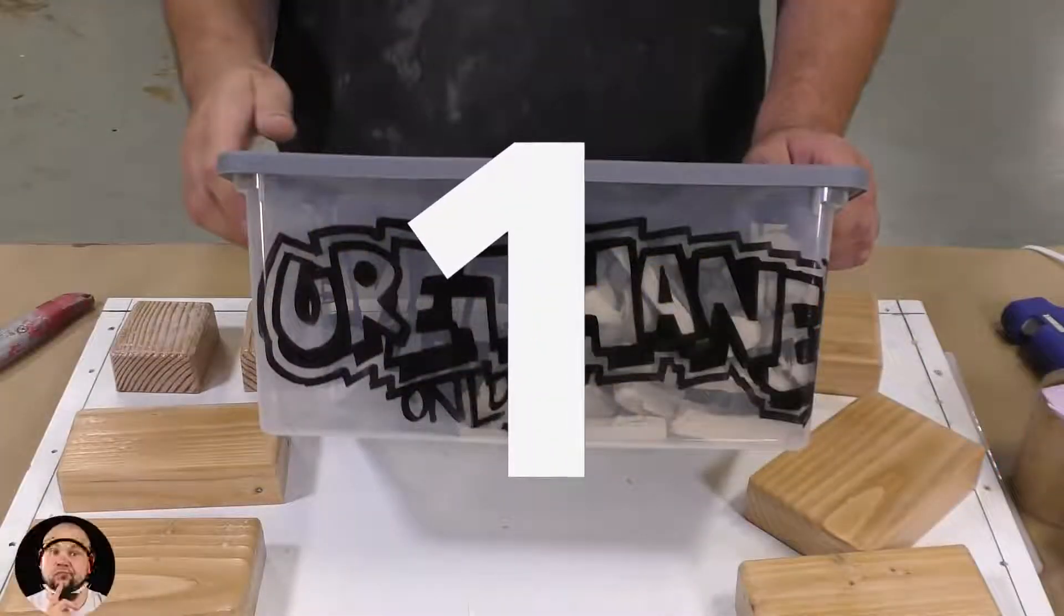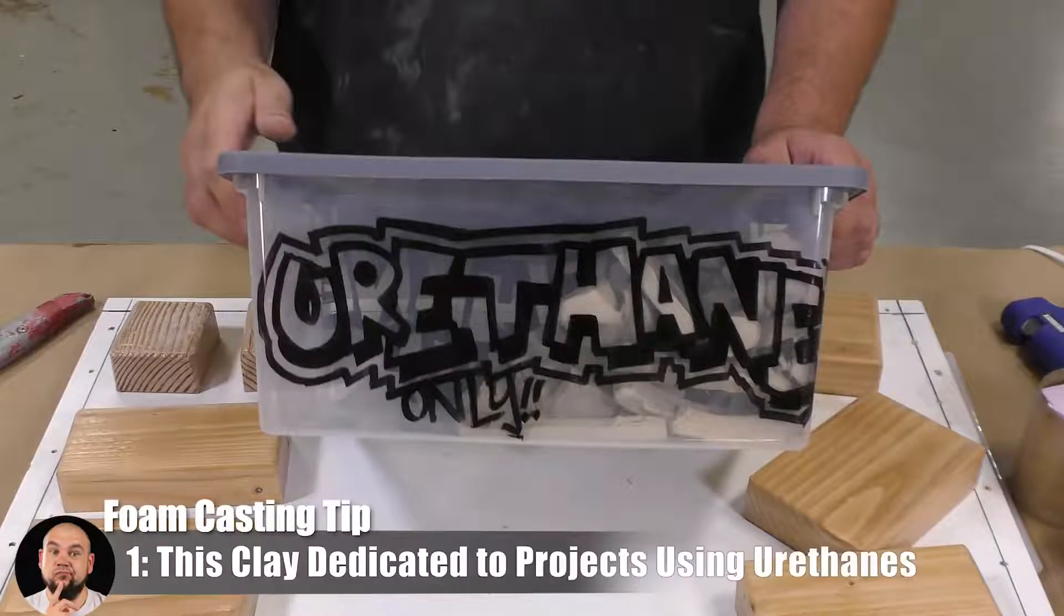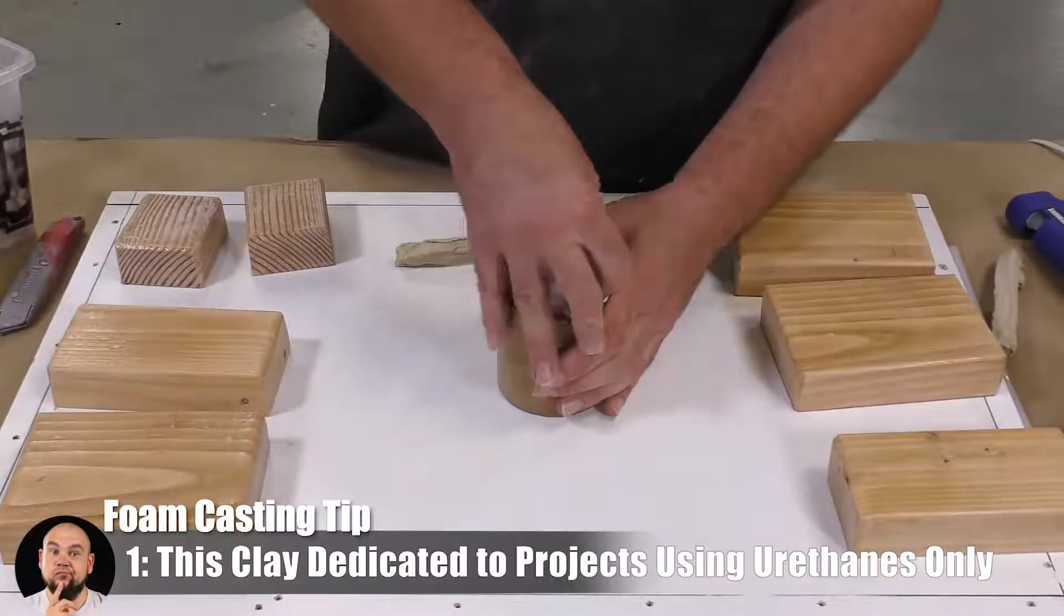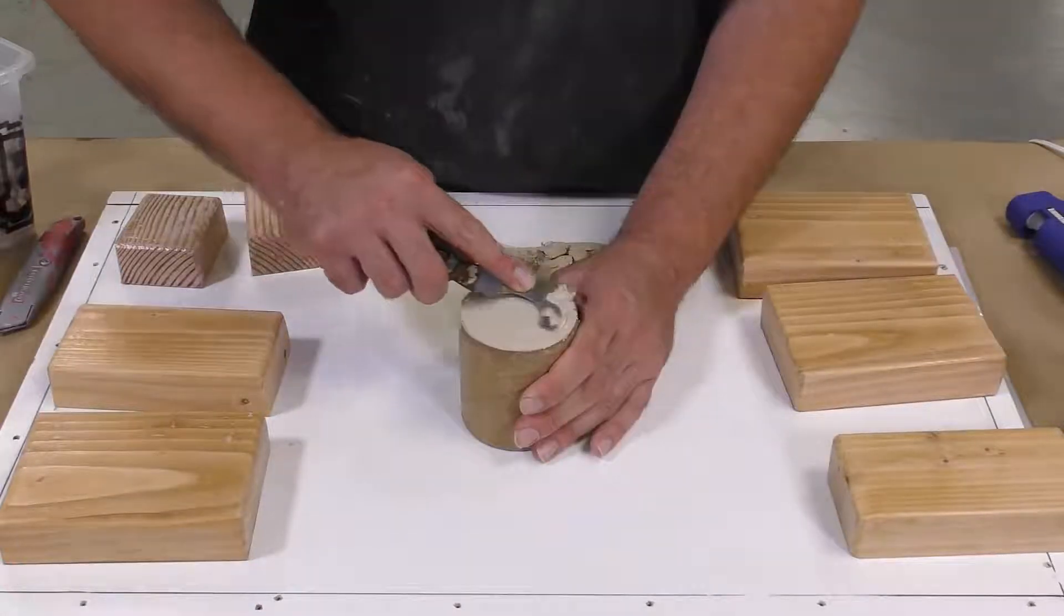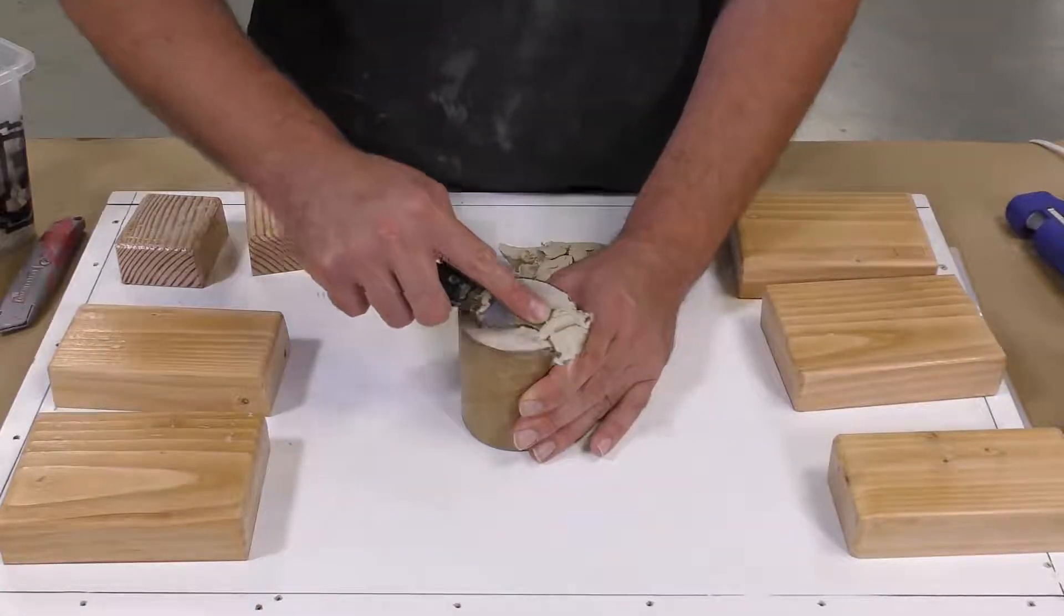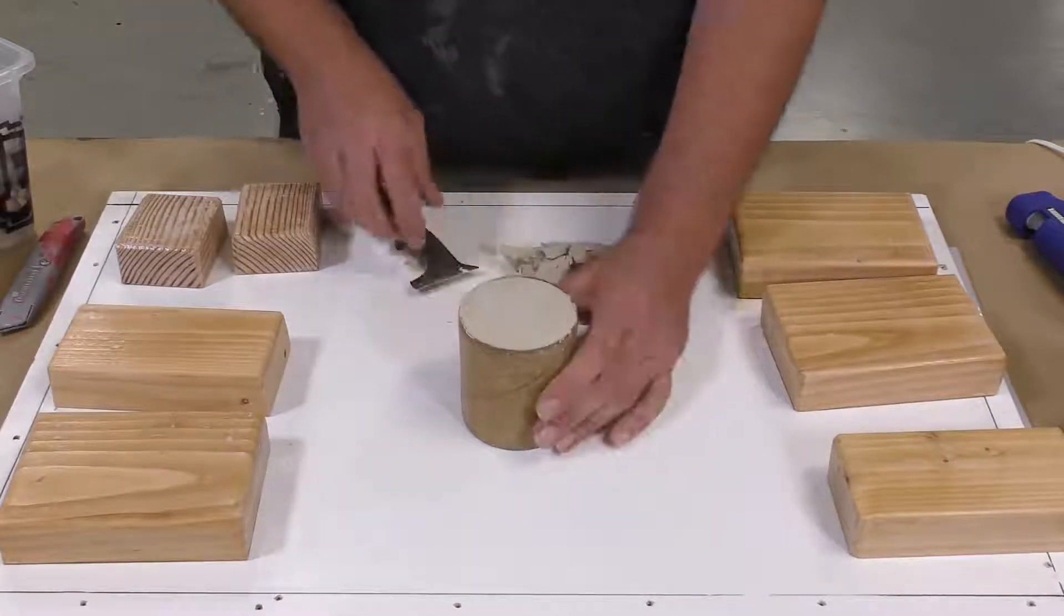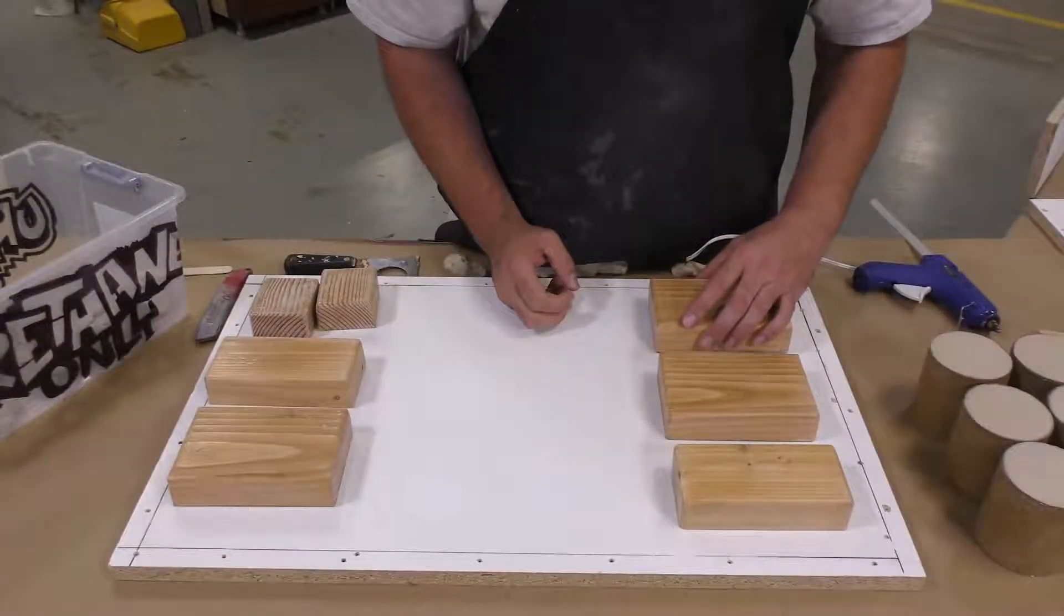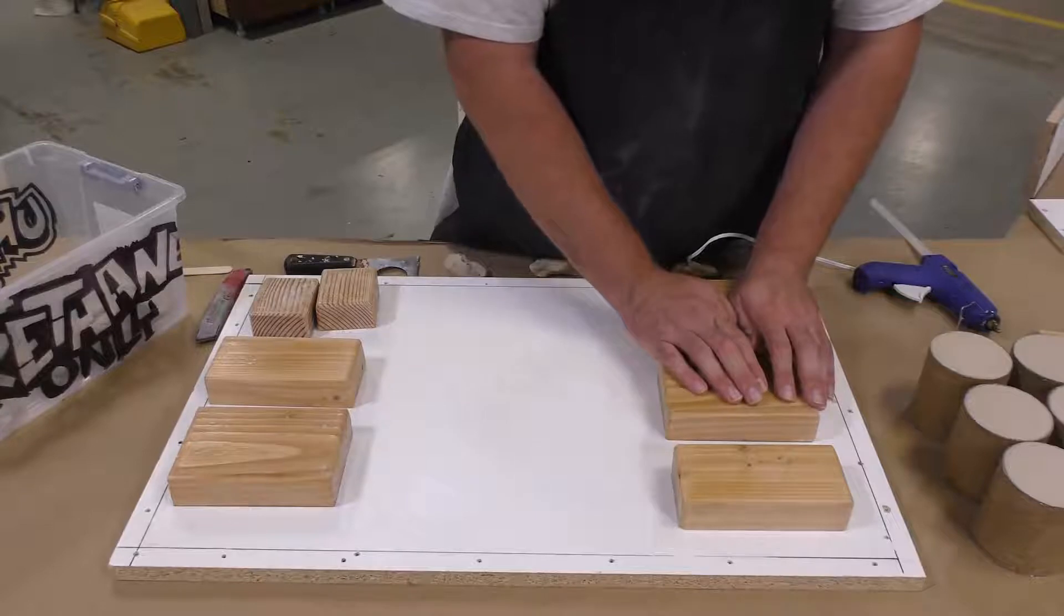Once all these inserts have dried, we can proceed to attach them to a board. I need some oil-based clay, and as you can see here I have a bin that says urethane only, which means the clay inside this bin has been in contact with urethane products previously. We want to keep it that way so we don't cause any kind of cross-contamination. Keep in mind that oil-based clays are reusable and you want to keep using them as long as possible.